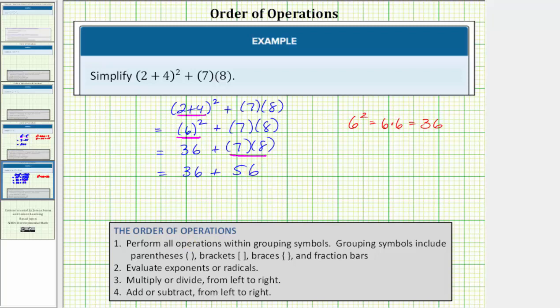There's only one operation left. The last step is to find the sum, which is also the fourth step in the order of operations. The last step is to add or subtract from left to right. Thirty-six plus fifty-six is equal to ninety-two. The given expression simplifies to ninety-two.